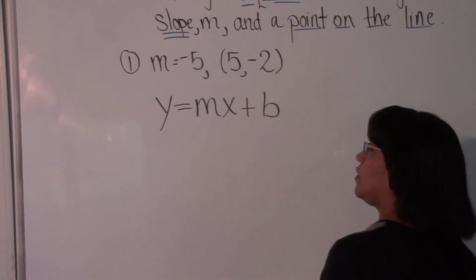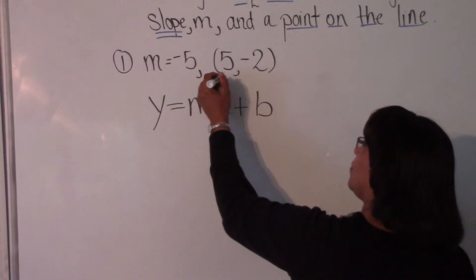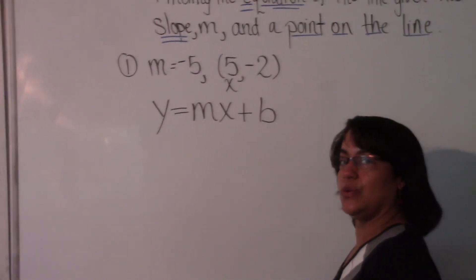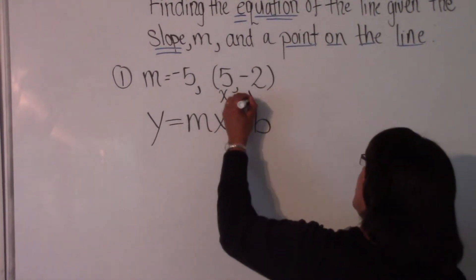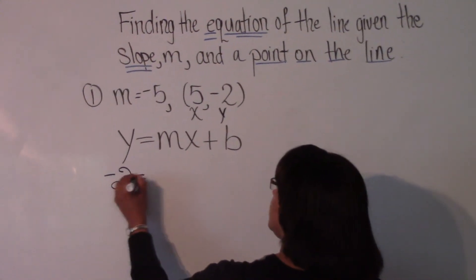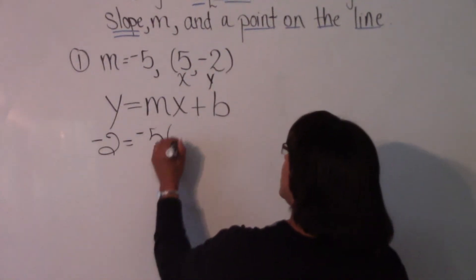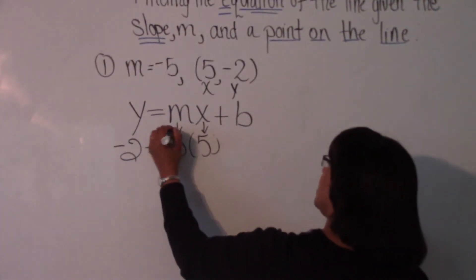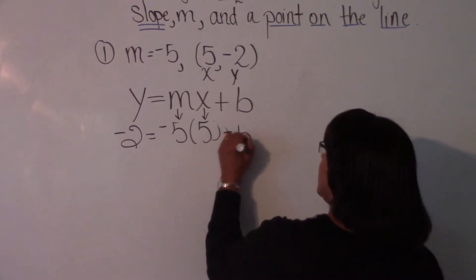So first of all, our x comes from our ordered pair. It's the x-coordinate of our ordered pair. So what is our y? Right, our y is negative 2. So negative 2 is equal to m times x. We took our x and we plugged in, and we took our m and we bring down our plus b.